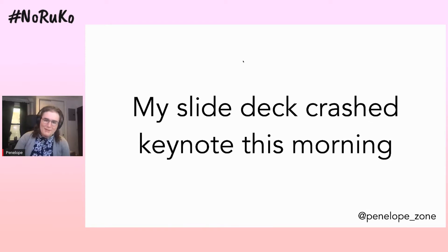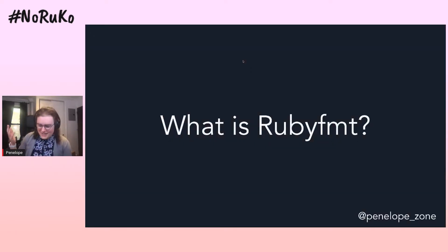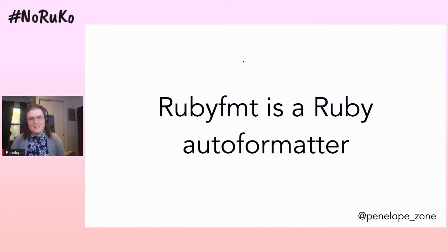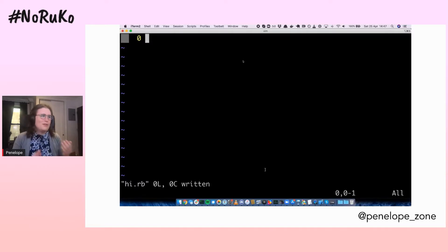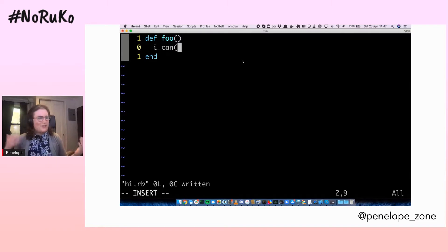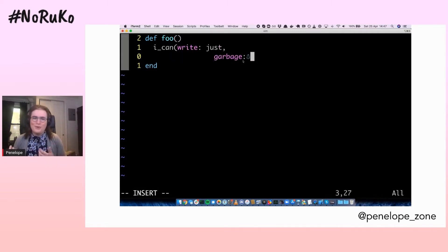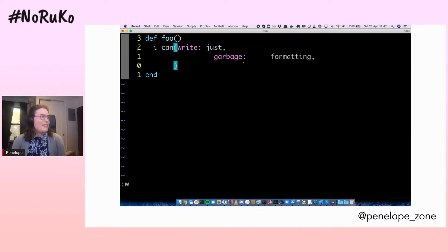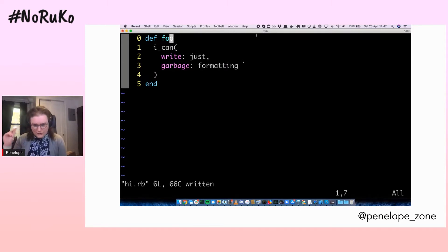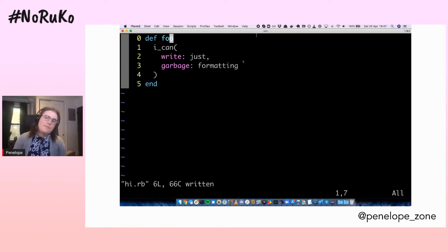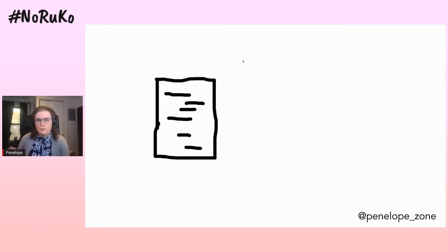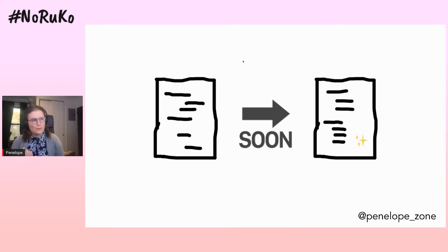With that preamble out of the way, let's talk about what Ruby Format actually is. The easiest answer is that Ruby Format is a Ruby auto-formatter. To demonstrate: what you see here is me just typing some Ruby, and the code looks nothing like Ruby you'd write daily — it's really bad. But when I save the file, the code just snaps into place. Ruby Format sits in your editor, watches for changes, and every time you save, overwrites it with a formatted version.